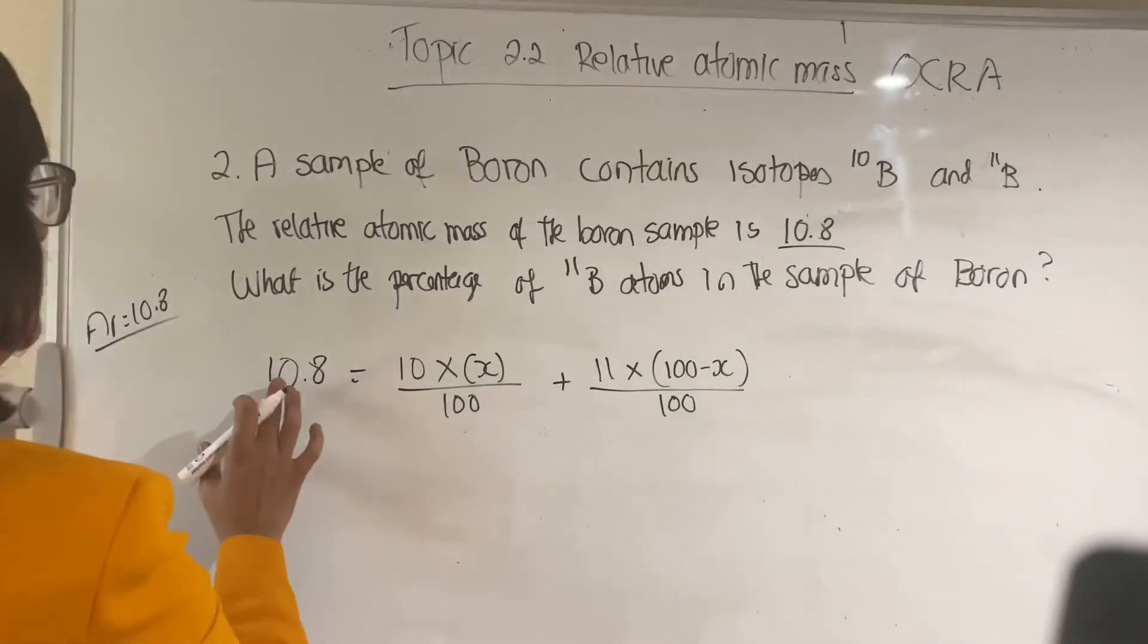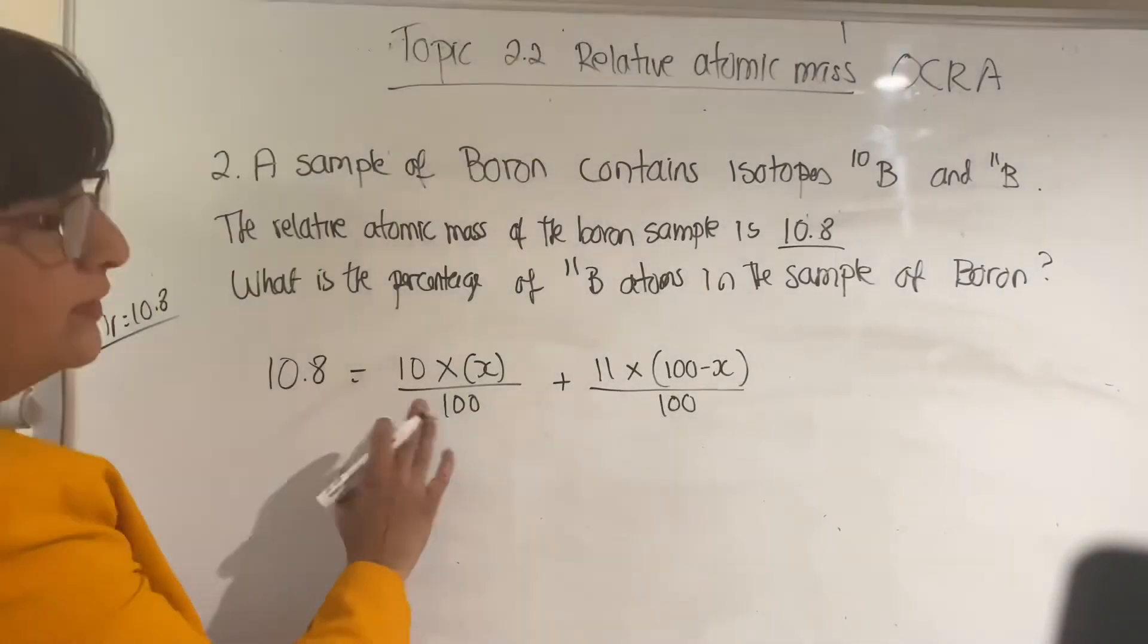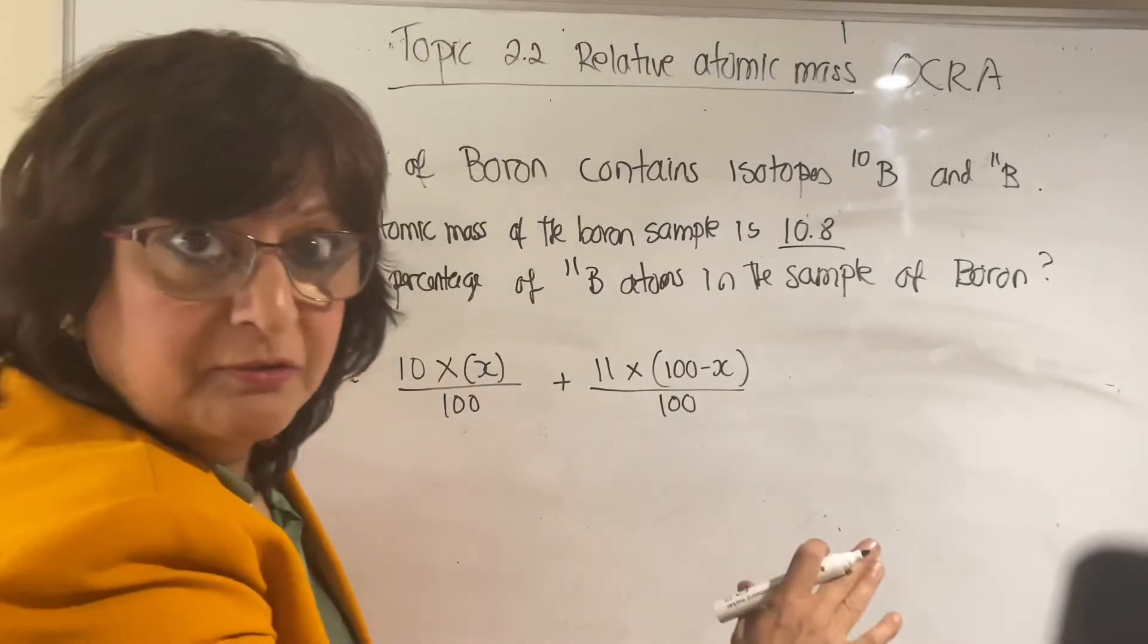So once you've got this set up, you have to rearrange the equation. By multiplying 10.8 by 100, you get rid of the 100 on the bottom of the fraction.